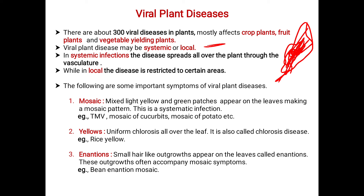Whereas in local infection, the disease is restricted to certain areas — only particular areas of the leaf. In systematic infection, the infection spreads all over, whereas in local infection it is confined to a specific region.